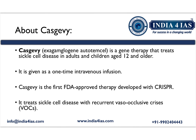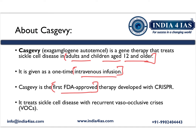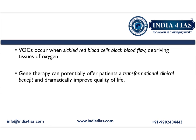Now, let us move to the main topic — CasGavi gene therapy. This gene therapy treats sickle cell disease in adults and children aged 12 and older. It is a one-time intravenous infusion. CasGavi is the first FDA-approved therapy developed with CRISPR-Cas9 technology. It treats sickle cell disease with recurrent vaso-occlusive crisis, meaning the sickle-shaped red blood cells block blood flow in the vessels, leading to deprivation of oxygen to the tissues.